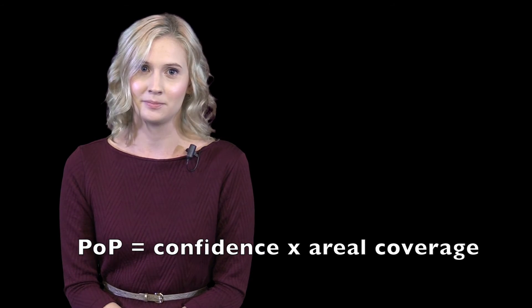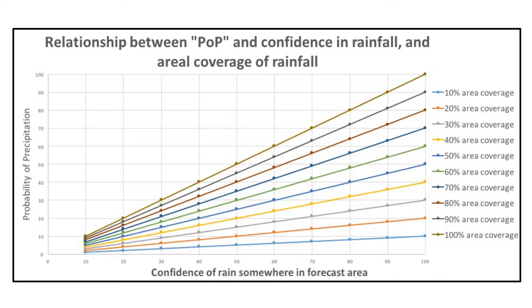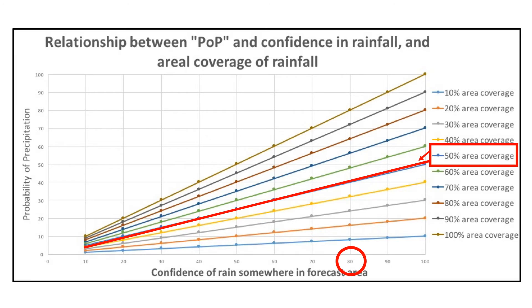Let's do an example. Say I am 80% sure that rain will fall somewhere in Northeast Ohio. This can happen if some atmospheric models are predicting rain when some aren't. Now, looking at the models that are forecasting rainfall, I then look at the aerial coverage. Let's say it's looking like half of my forecast area is going to get some rain.